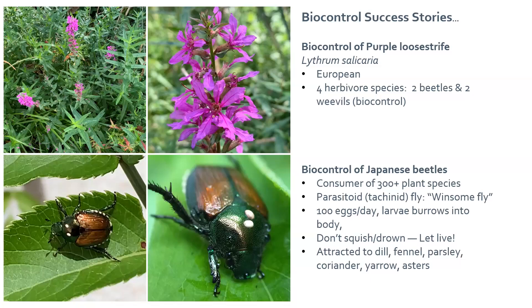If you find Japanese beetles on your property and are in the habit of drowning them in soapy water or crushing them, leave the ones that have eggs on them alone — that is helping the winsome fly proliferate into future generations. If you want to attract the flies, you can plant dill, fennel, parsley, coriander, yarrow, and asters. You can't typically buy biological controls online, but you can grow the plants that will attract the flies. Japanese beetles are not as bad as they once were, but they still cause millions of dollars worth of crop damage every year and eat 300 plant species.